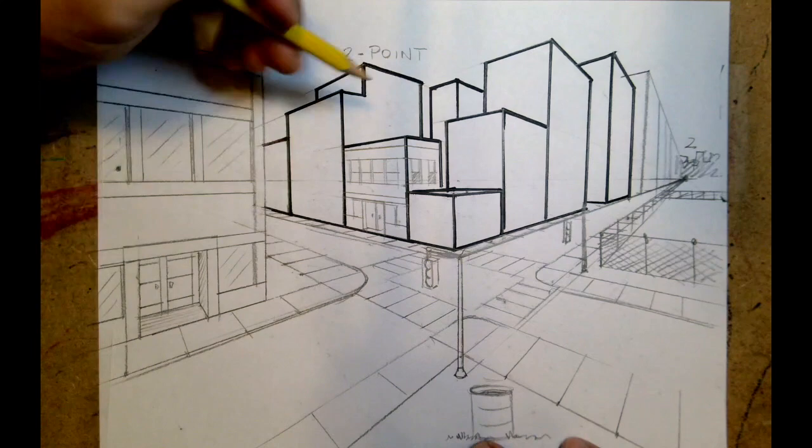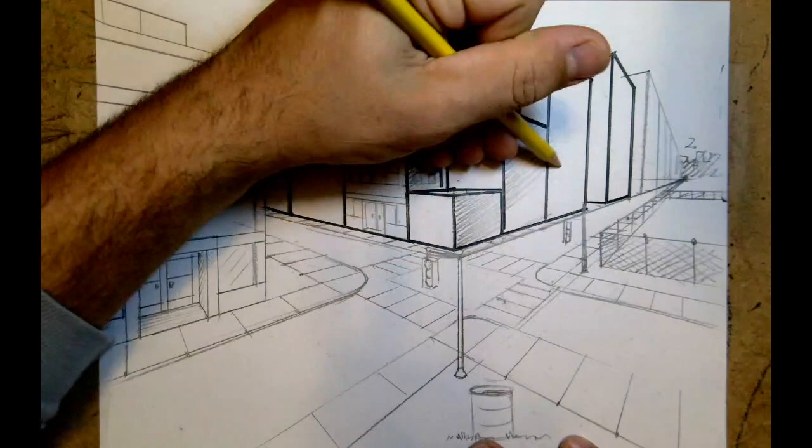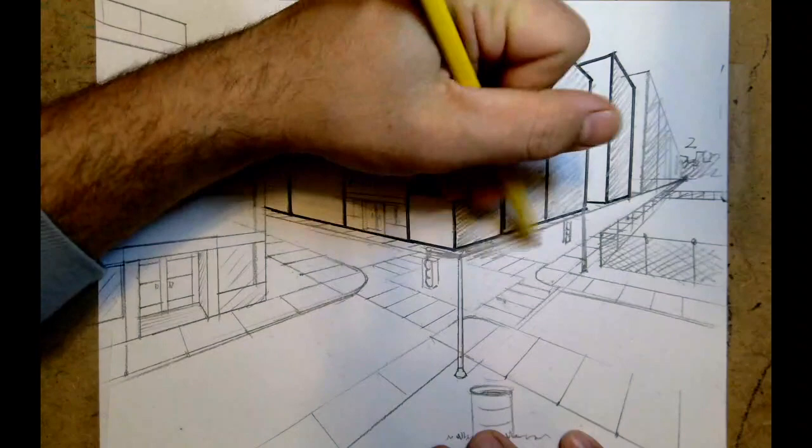I'm going to do some shading on the right side of these buildings because I'm going to create a light source coming in from the left, and I'll show you how to do some enhancements with light source as well, about cast shadows and that.